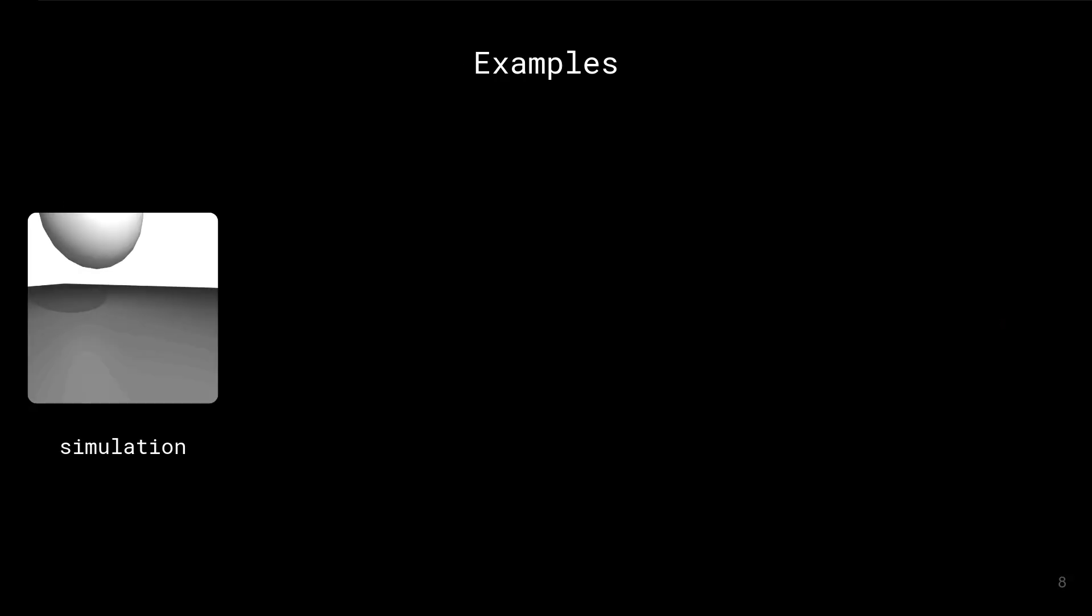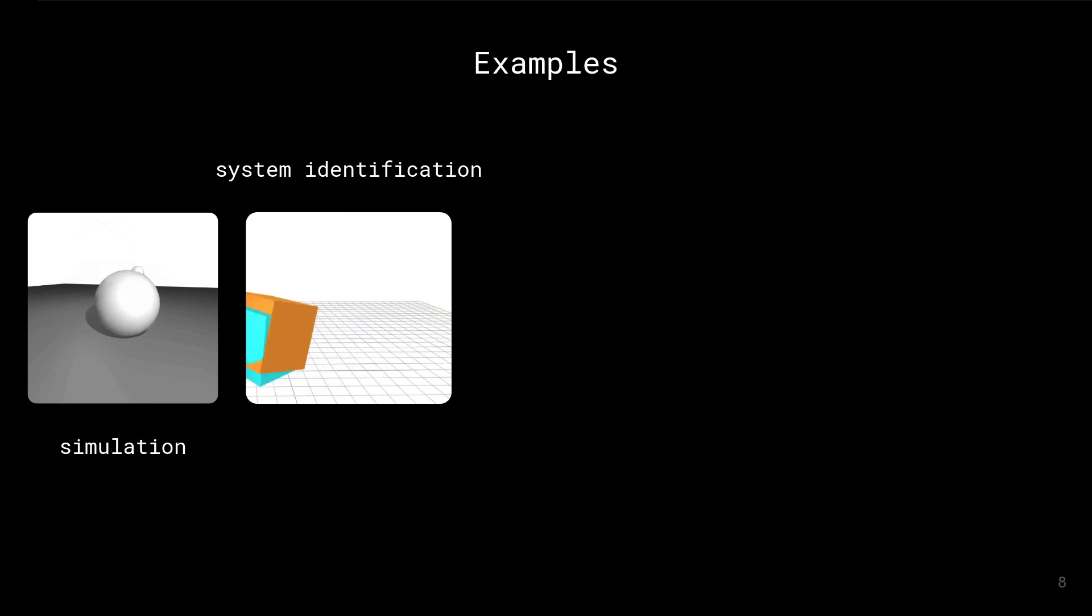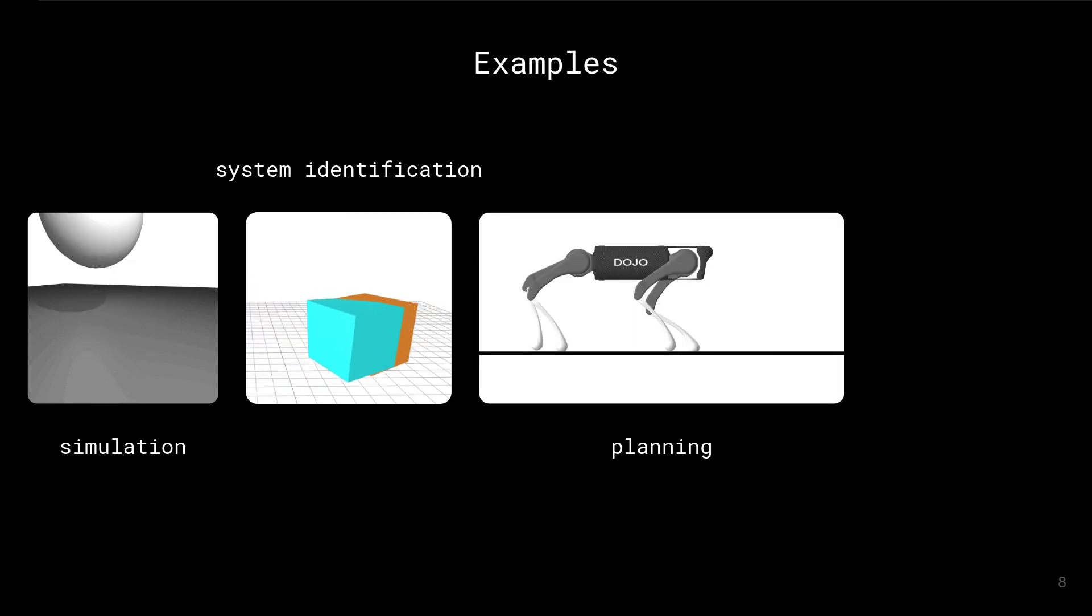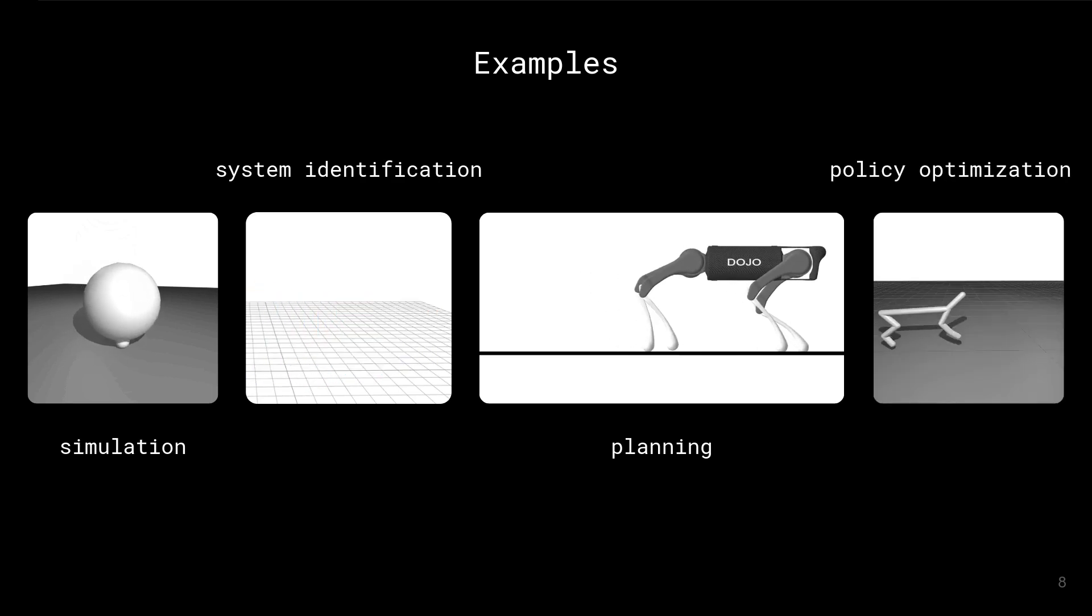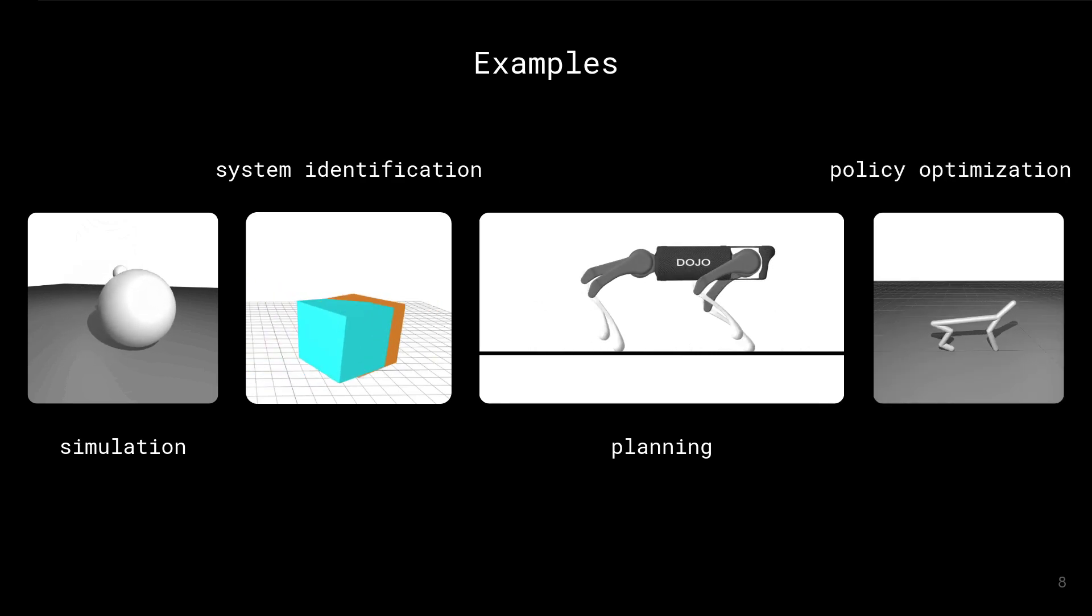We demonstrate the simulation capabilities of DOJO on multiple dynamical systems. Additionally, we leverage the smooth gradient formulation provided by DOJO in several gradient-based optimization tasks, such as system identification, planning, and policy optimization.